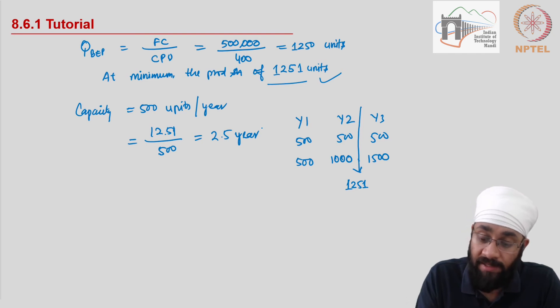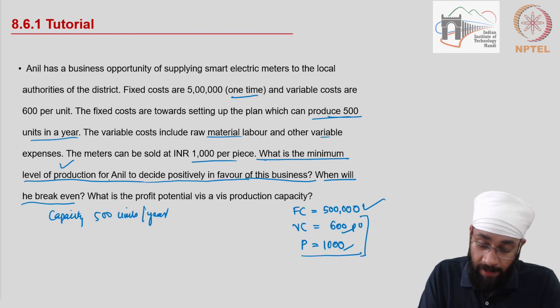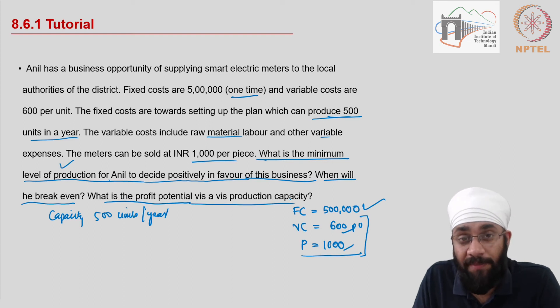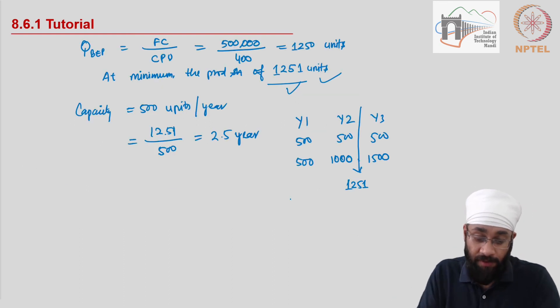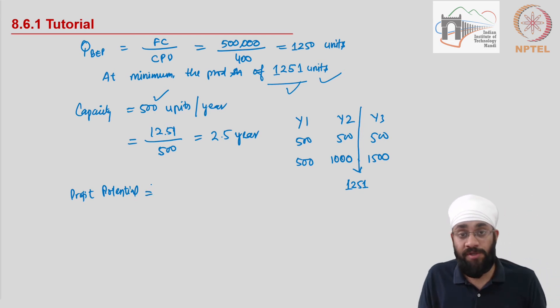The third question is: what is the profit potential vis-a-vis production capacity? So production capacity is 500 units. Now profit potential is actually something very subjective, but a lot of subjectivities go into decision making as well.